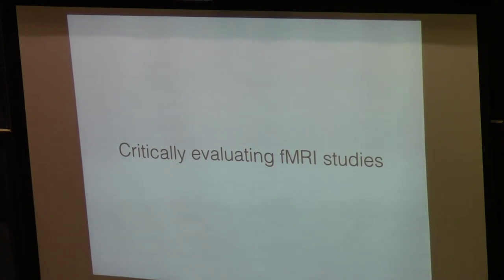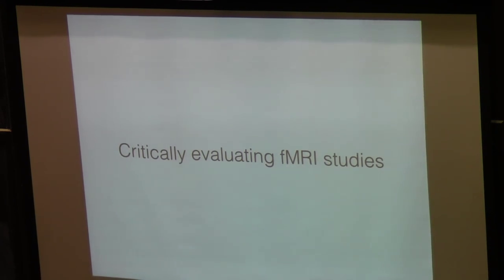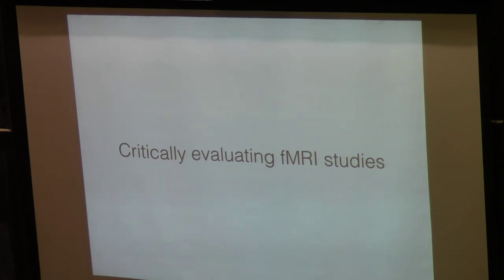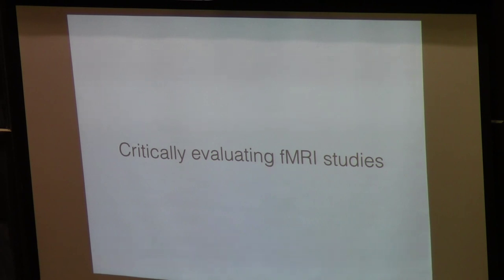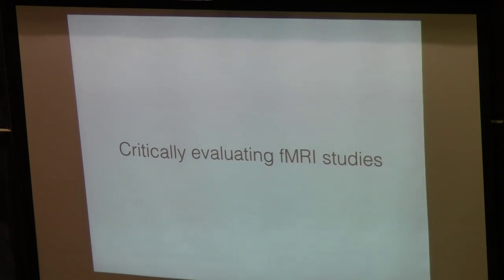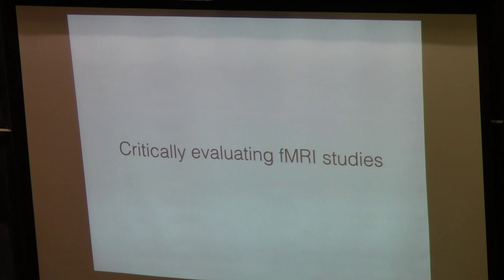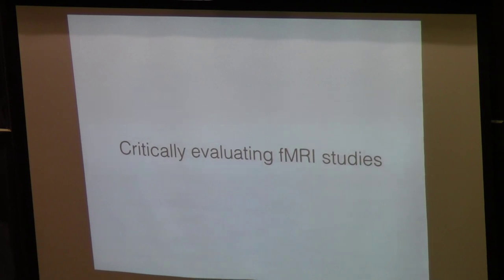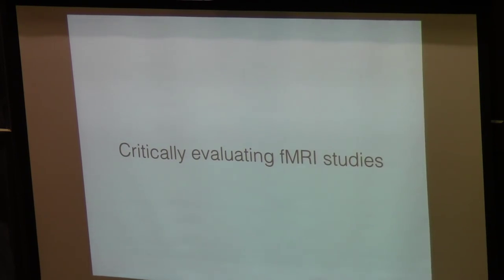I thought it might be a good idea to go over how to critically evaluate fMRI studies. A lot of times you see studies in newspapers saying that region X activates when you look at faces or think about emotions. These things get into the New York Times and the Wall Street Journal, but a lot of times the control conditions that need to be done haven't been properly done. I'll give you two of the main mistakes people make so that next time you read the news you can think to yourself: is this actually measuring what they say it's measuring?